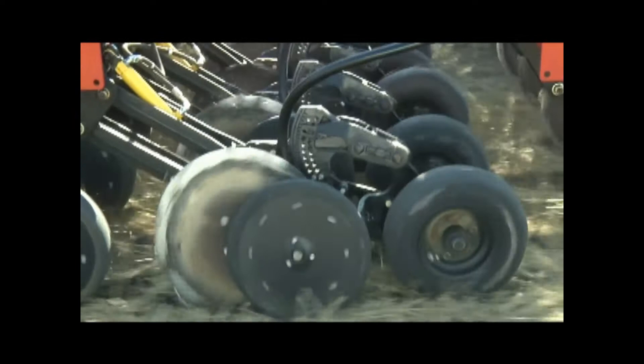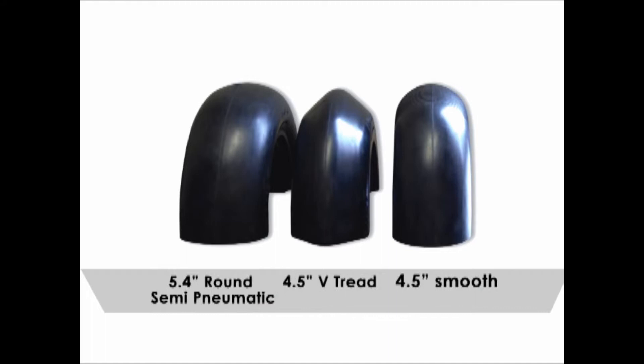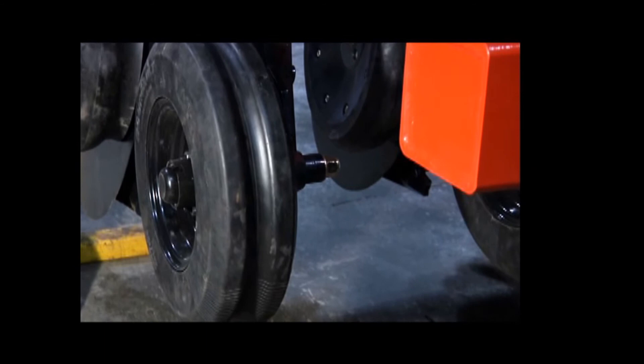Bourgault provides the option of a 4.8-inch fully pneumatic smooth crown packer wheel, a 4.5-inch semi-pneumatic smooth crown packer, a 5.4-inch semi-pneumatic smooth crown packer wheel, and a 4.5-inch double shoulder semi-pneumatic packer.